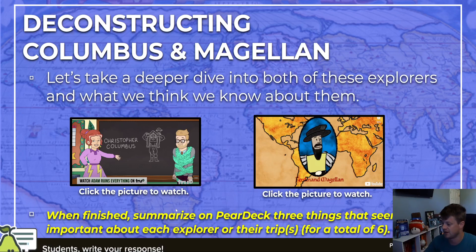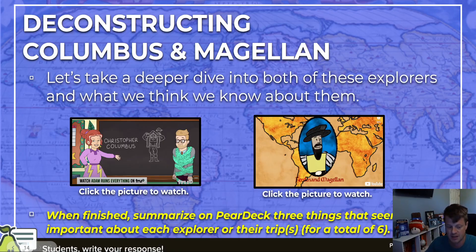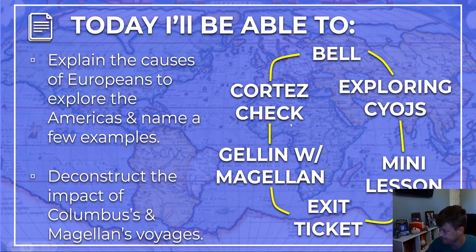When you're done with those videos, summarize on Pear Deck three things that seem important about each explorer or their trips — Columbus and Magellan — for a total of six points.